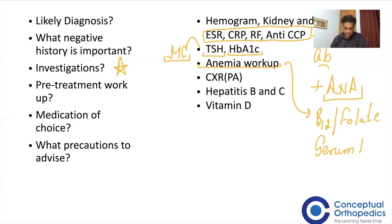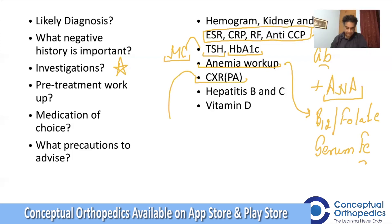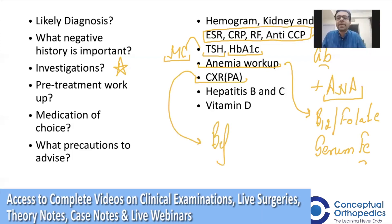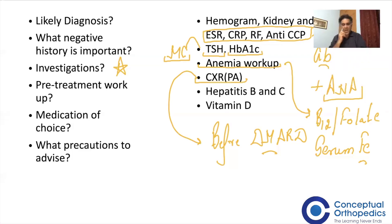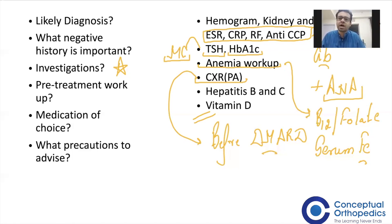We must evaluate with B12, folate, and serum iron studies including ferritin to address and manage anemia appropriately. A chest X-ray is needed before starting DMARDs. For young females, we must confirm they are not pregnant before ordering X-rays. Hepatitis B and C testing is mandatory before starting methotrexate or any DMARDs or biological DMARDs — even if not suspected, to rule out a chronic carrier state. Vitamin D deficiency must also be addressed, as it is known to cause aches and pains and predispose to rheumatoid arthritis. Now, what is the medication of choice?